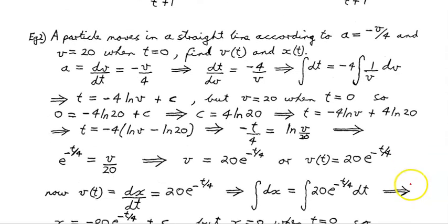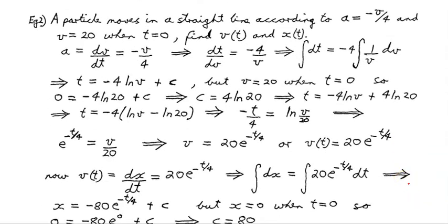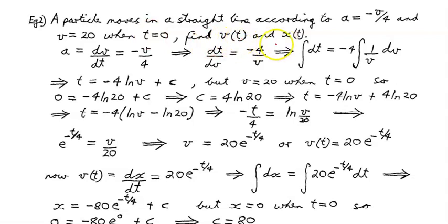Now let's look at the other variety, involving acceleration, which is the rate of change of velocity with respect to time. A particle moves in a straight line according to a equals minus v on 4, and v equals 20 when t equals 0. Its initial velocity is 20 meters per second. Find v of t and the position as a function of time. So a equals dv/dt equals minus v on 4.